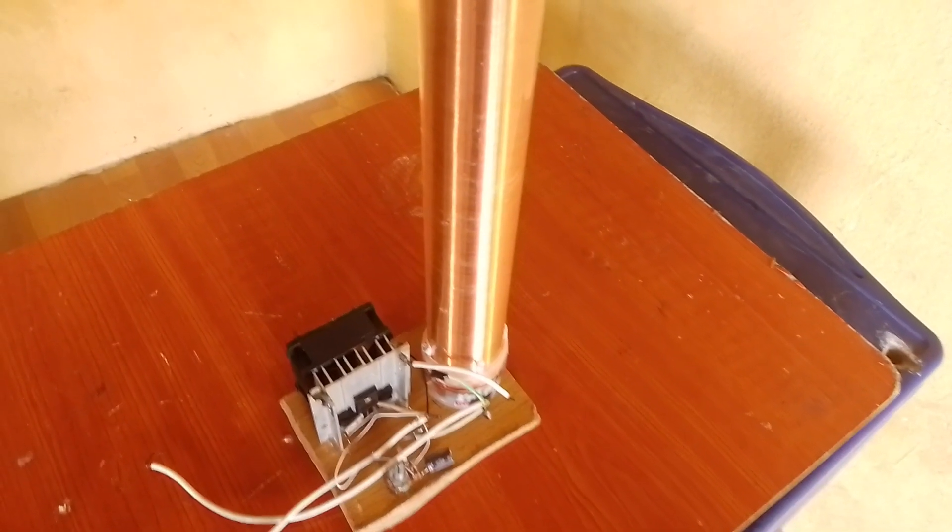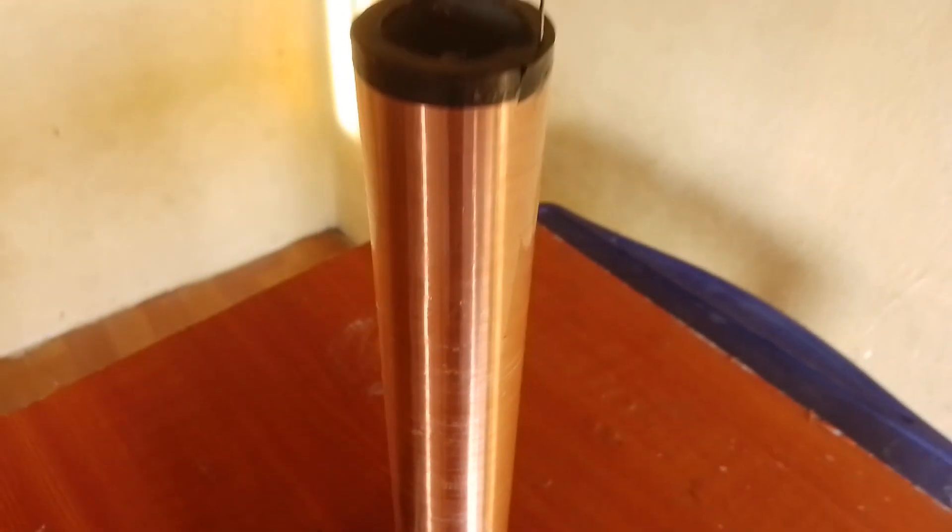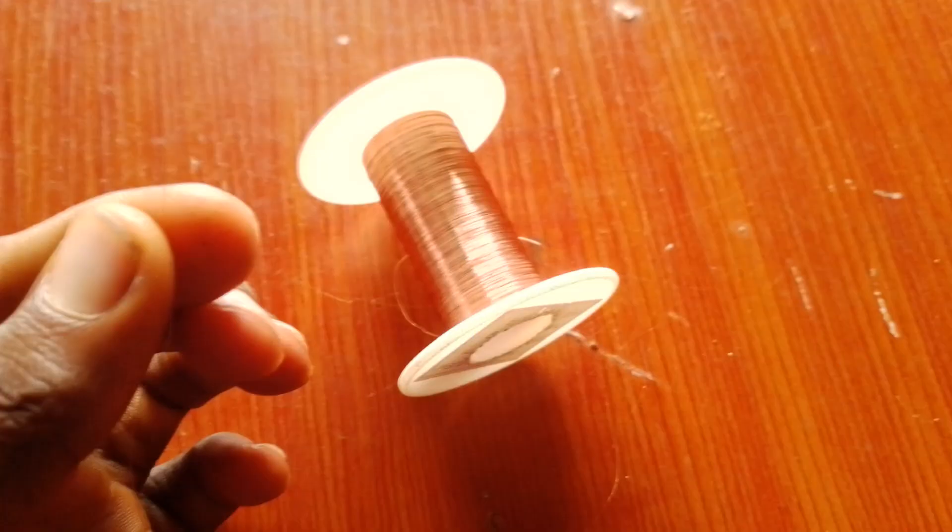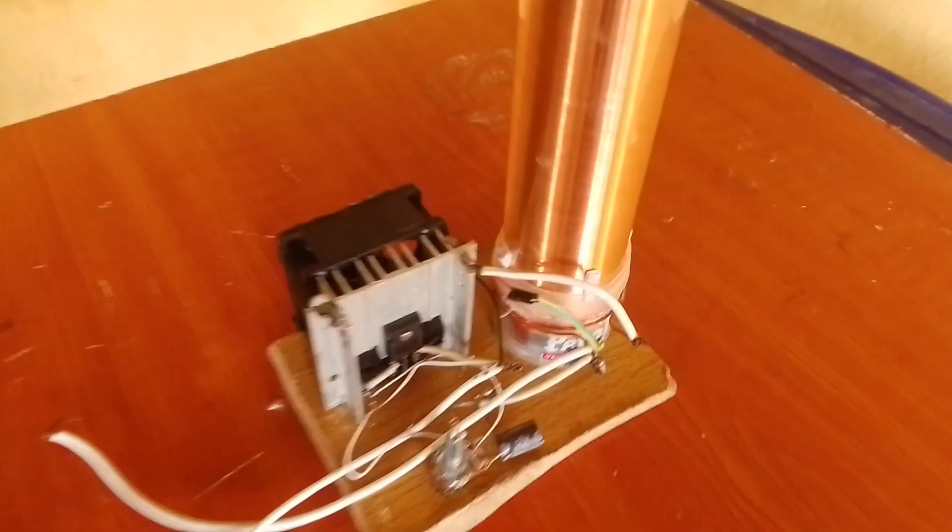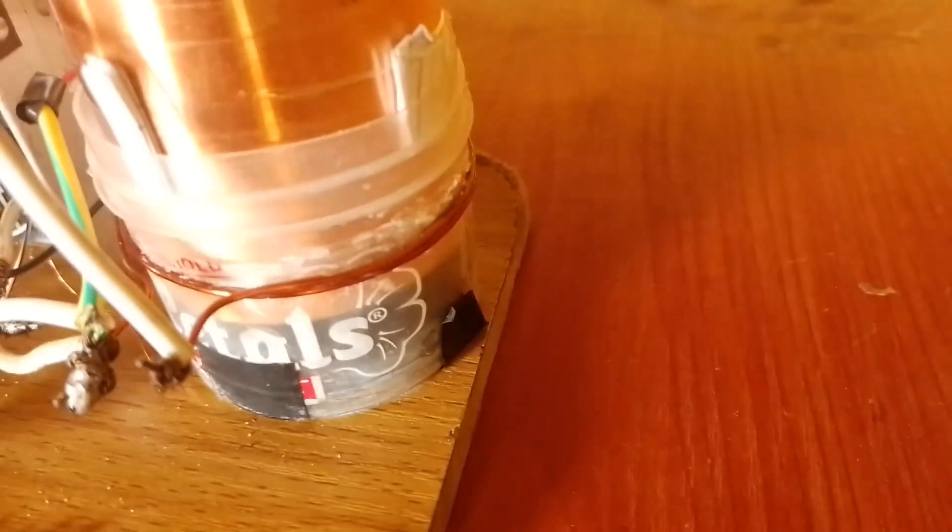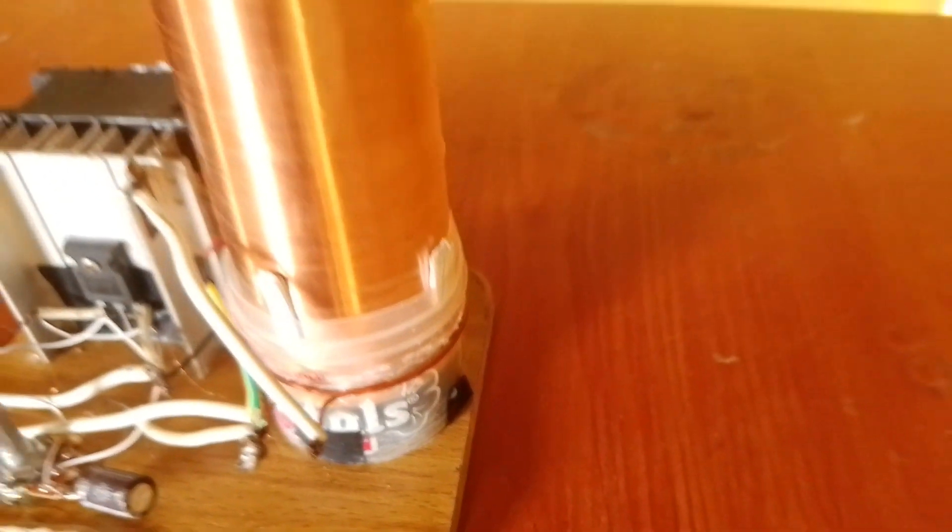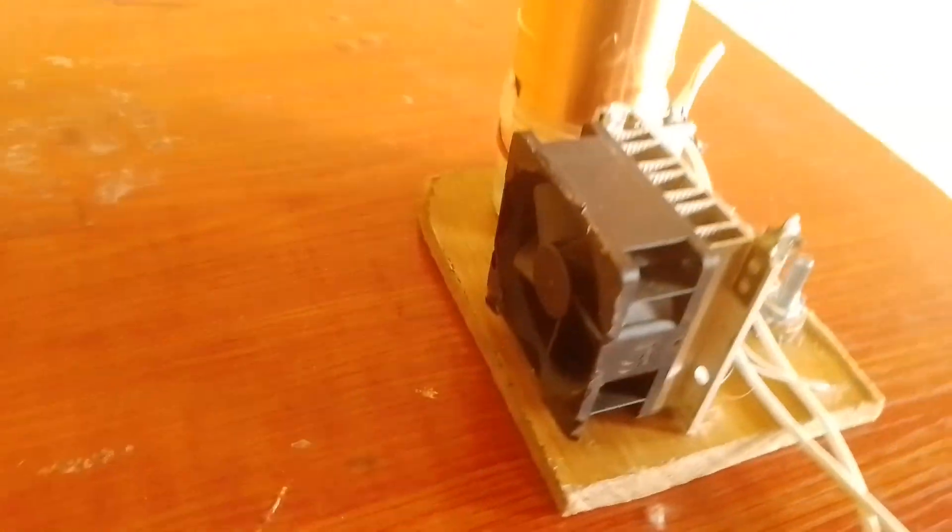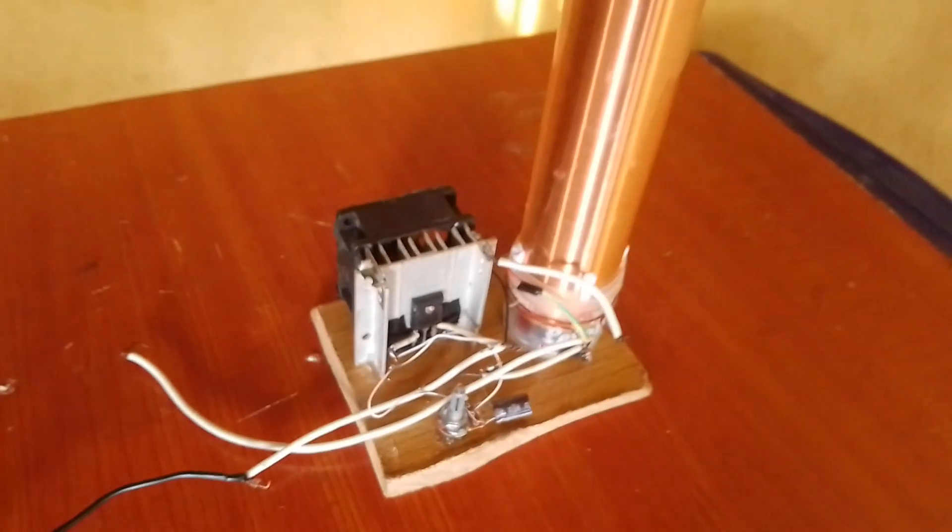So after putting everything together, here's what I've got. As you can see, here's the 1,000 turns secondary coil. I used 0.1 mm wire, very thin. And as you can see here, is the 2 turns of wire, the primary coil. And I also attached the MOSFET to a heat sink, and the heat sink to a 12 volt fan to cool it down and prevent it from damaging.